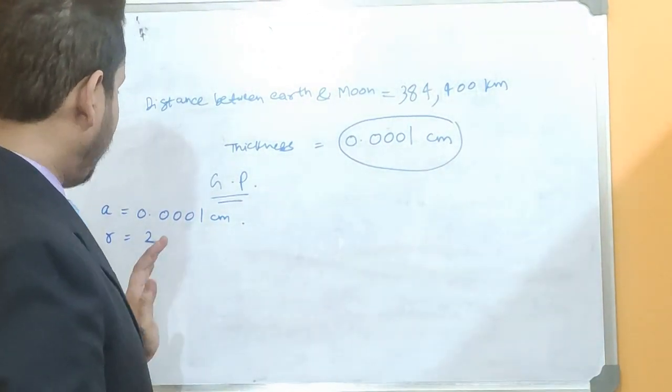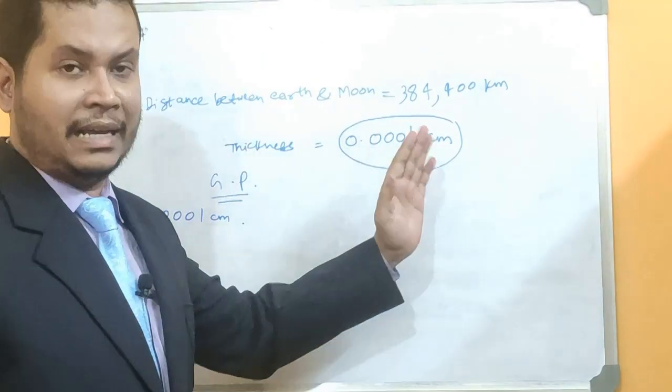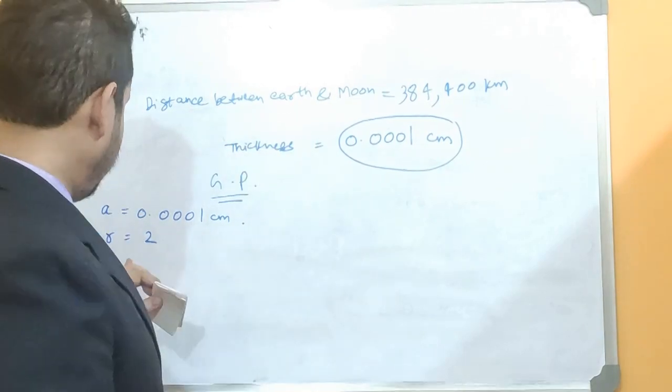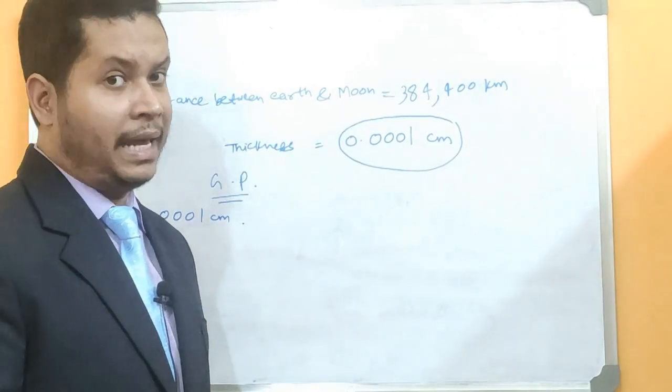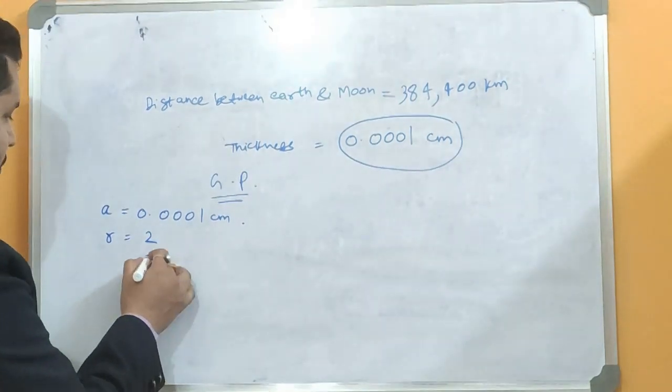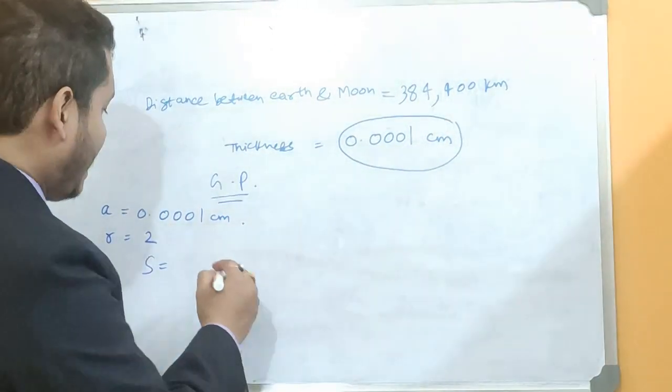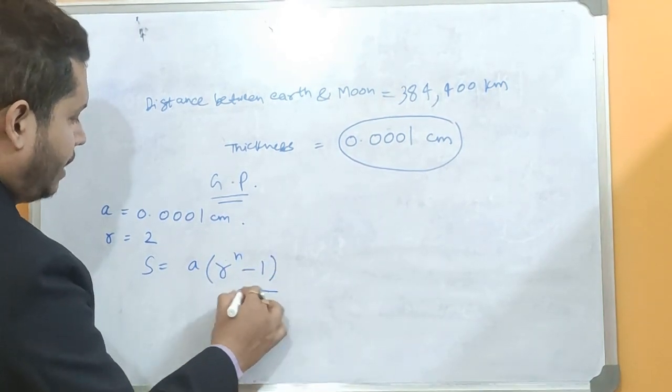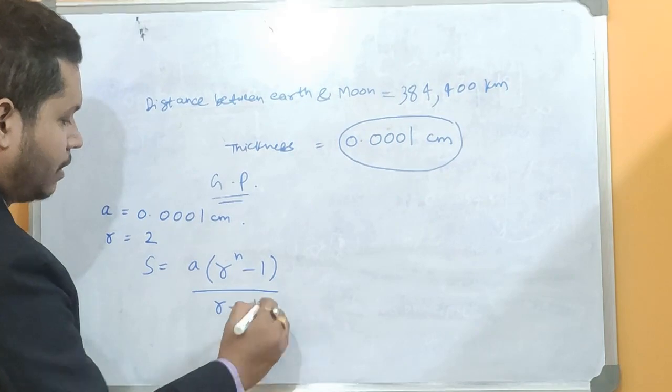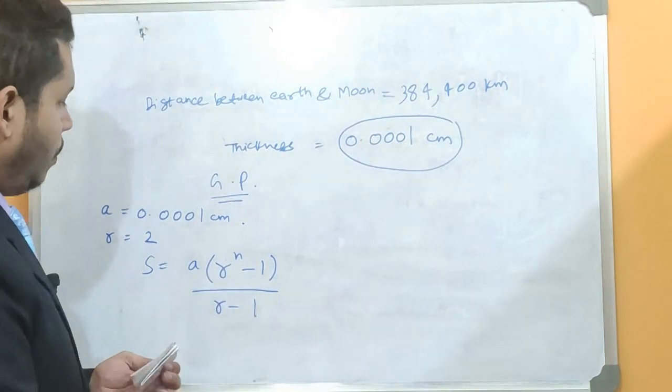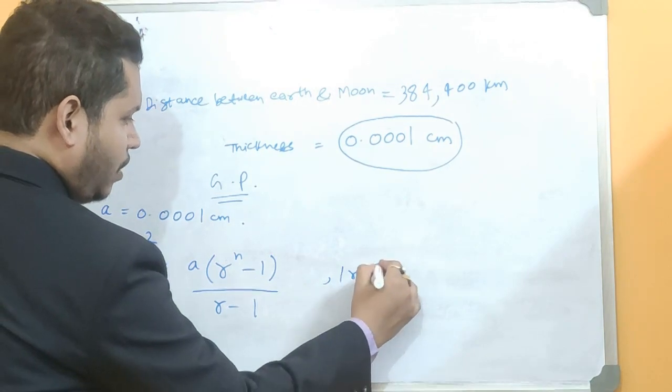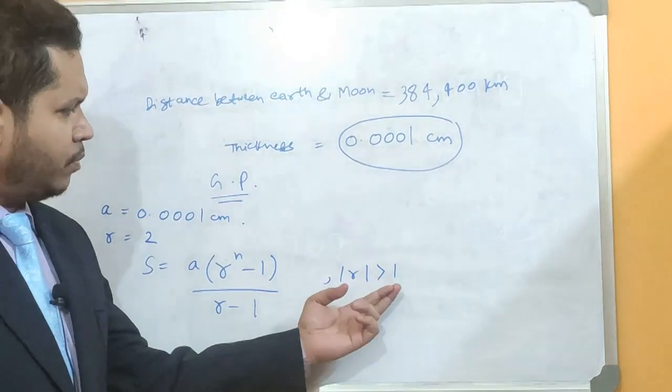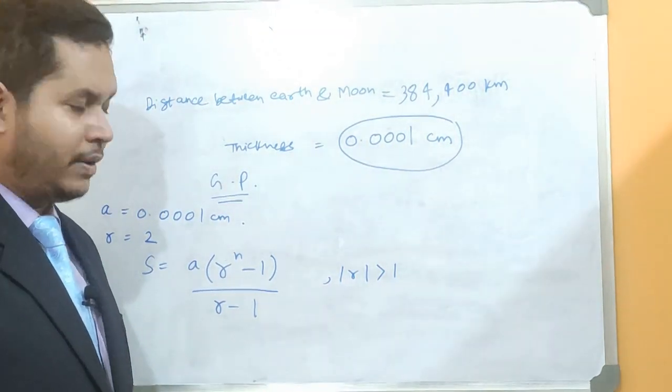Now if we apply, so that means if I want to know the thickness after folding this paper 50 times, you can calculate by applying the sum formula of GP. What is the formula of sum? It is A into R to the power n minus 1 divided by R minus 1. Right? So this formula is applicable when the absolute value of r is more than 1. And in this case the common ratio is 2. So this is more than 1. So this is the formula that we all are going to apply. Right?